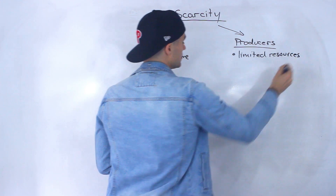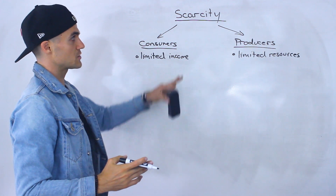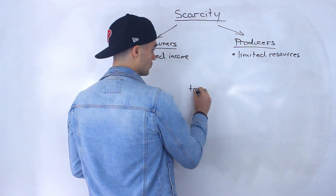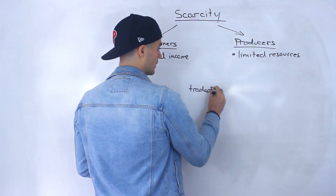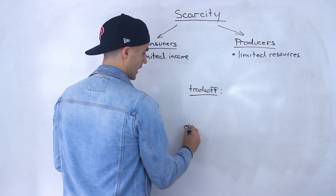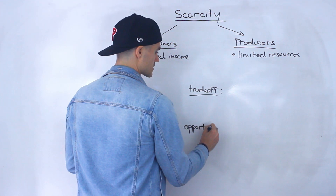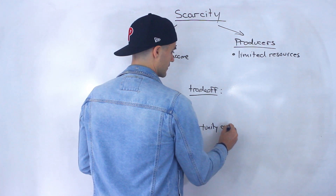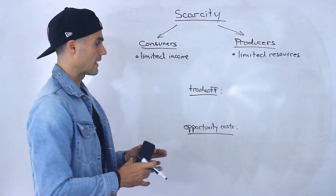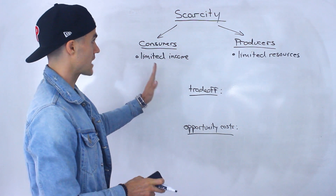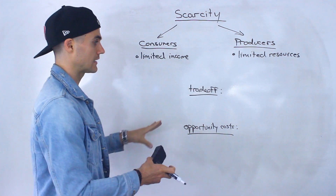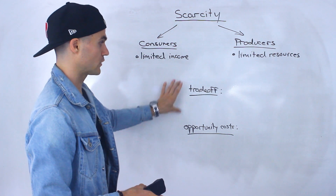Certain words that you're going to see related to scarcity that are definitely going to come up — the two that really stand out are the concepts of trade-offs and opportunity costs. What I'm going to do is define these two concepts in general, and then take them and relate them to consumers and producers. So we're going to dig in a little bit more, but let's keep it general for now.